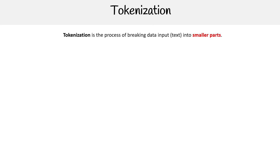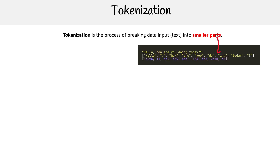So tokenization is the process of breaking data input, and in most cases text into smaller parts. Here on the right-hand side, imagine you have a string and you're going to break it up into its parts, which we represent as an array. And then we're going to give it a unique ID to the model's vocabulary.